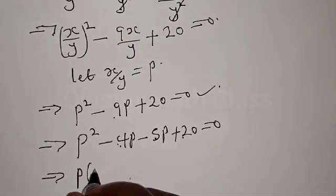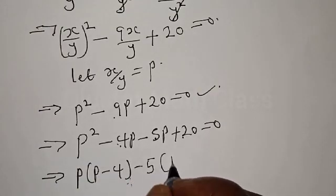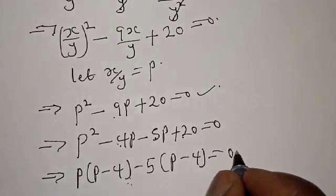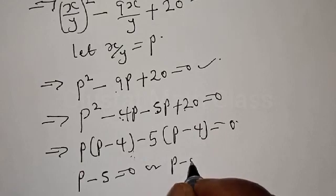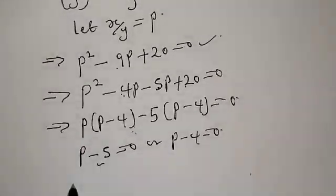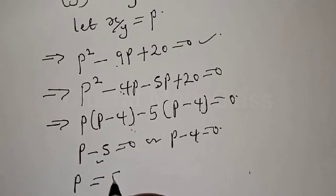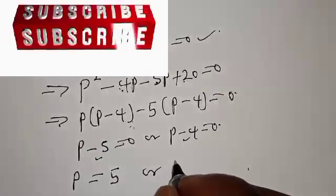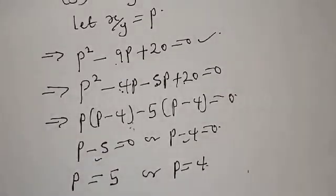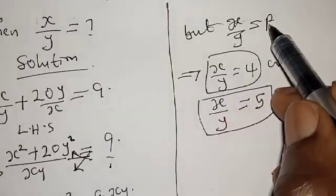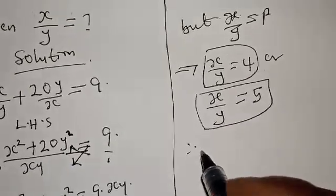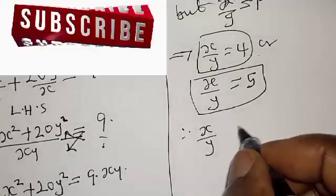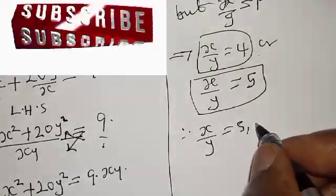Factoring gives p(p minus 4) minus 5(p minus 4) equal to zero, so (p minus 5)(p minus 4) equal to zero. Therefore p minus 5 equal to 0 or p minus 4 equal to 0, giving p equal to 5 or p equal to 4. Since x over y equals p, our final answer is x over y equal to 4 or x over y equal to 5.